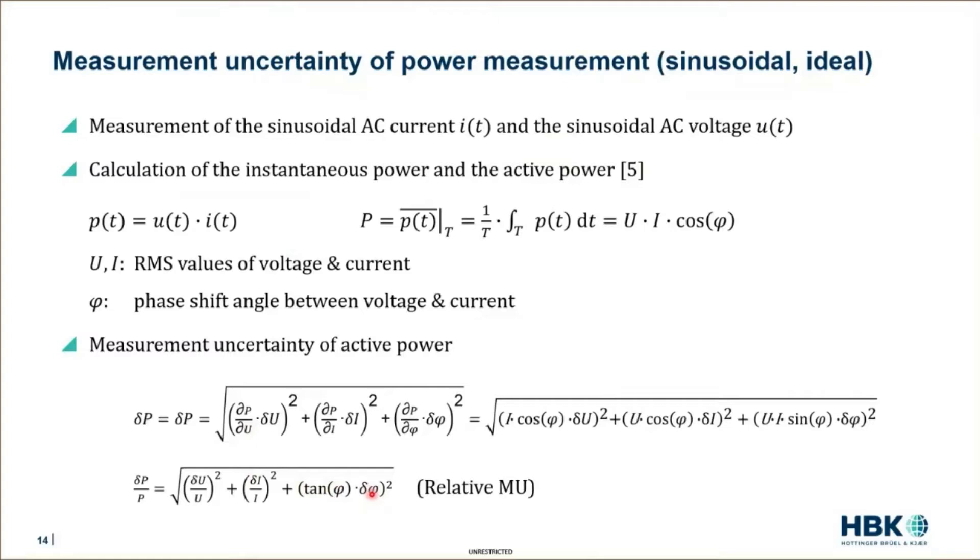It's useful to do this in the first step. Because if you think about electric drive applications, the electric machine represents a high inductive load. Therefore, the currents are more or less sinusoidal as we saw in the measurements before. And for this reason, most of the active power is transferred in the fundamental. If you know the measurement uncertainty of the fundamental, that's a good estimate to guess how big the overall measurement uncertainty of the total power could be. But of course, if you want to go into detail, we need something different.